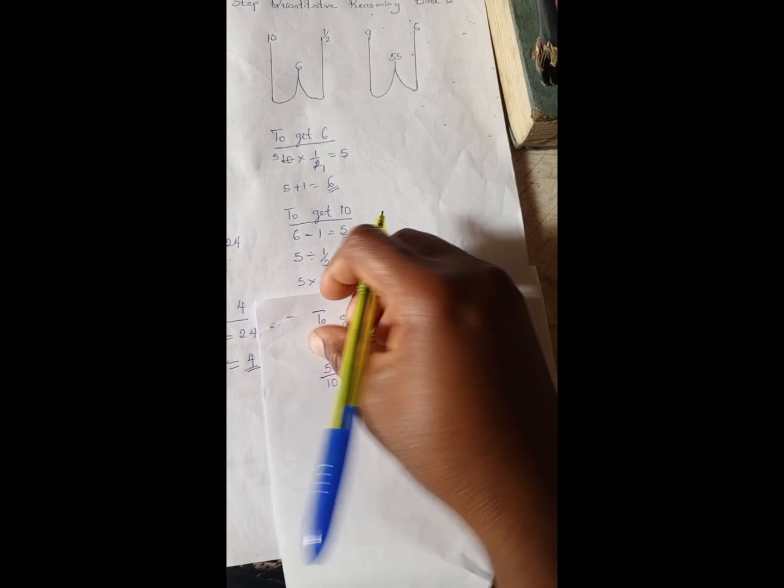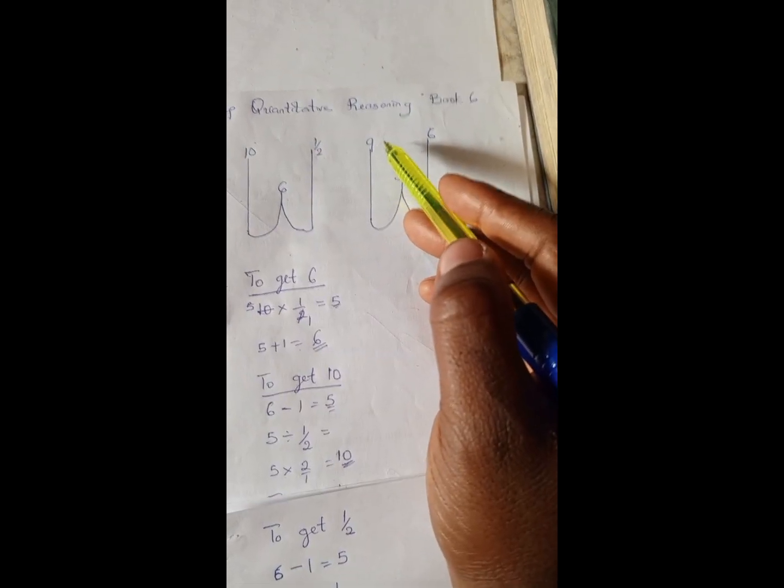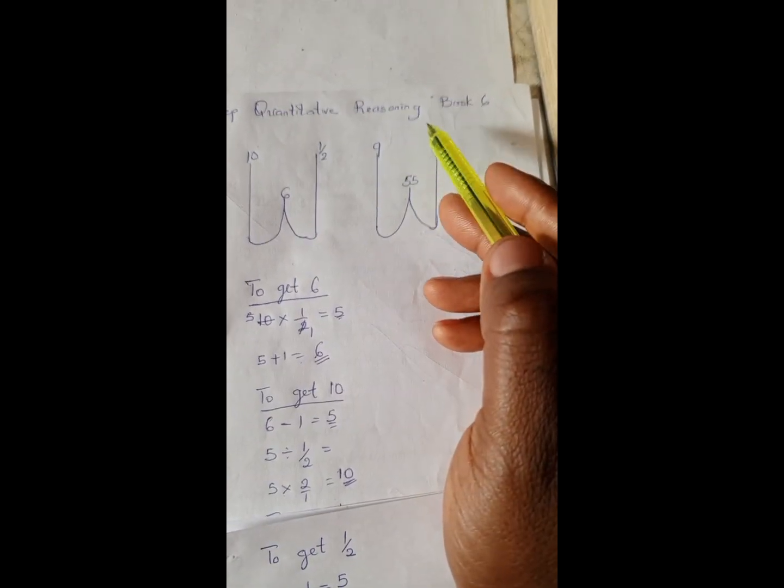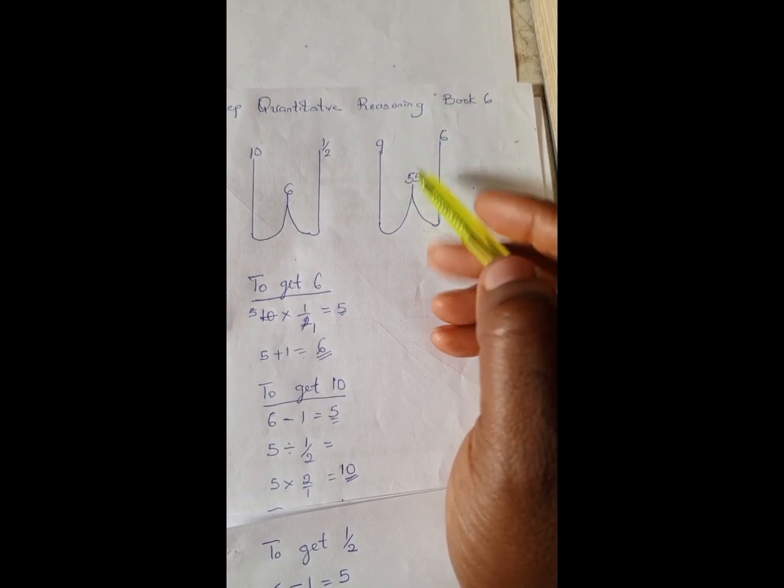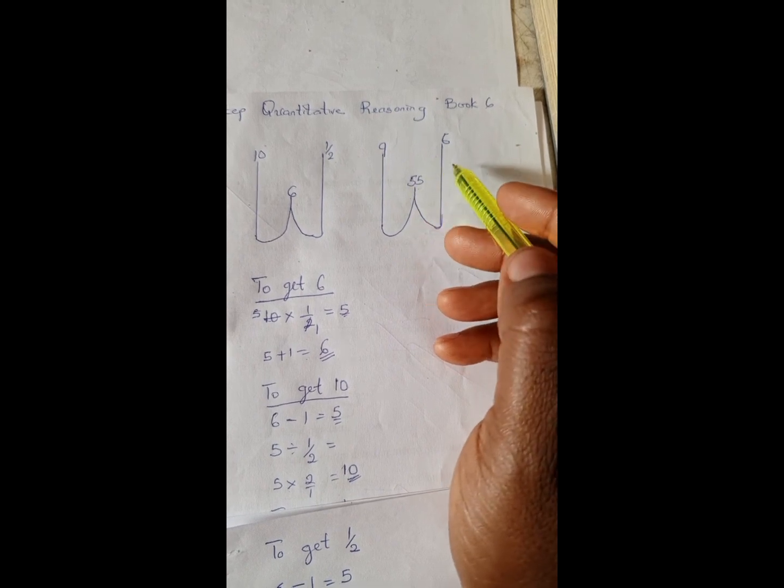As you can see, this worked, and it's going to work for the third example too. 6 times 9 is 54, 54 plus 1 is 55. 55 minus 1 is 54, 54 divided by 9 is 6, and so on.